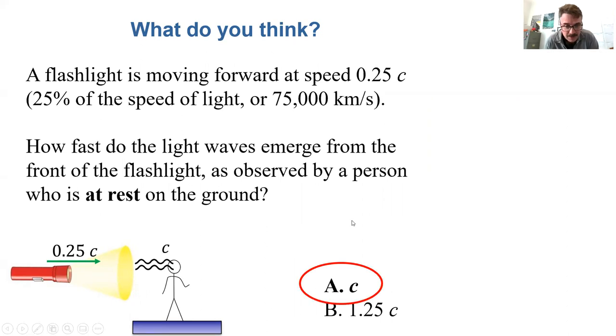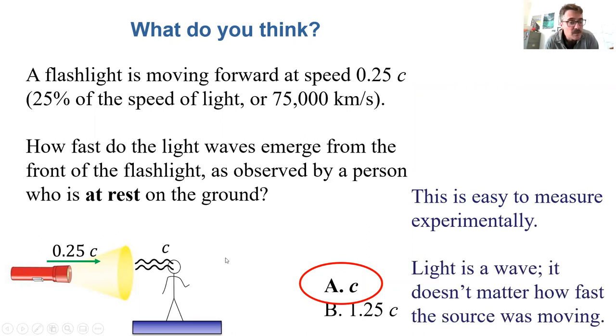Well this is easy to measure. The answer turns out to be c and it kind of makes sense. Light is a wave after all and so the laws of physics determine how fast an electromagnetic wave will travel. It doesn't matter if the source is moving.